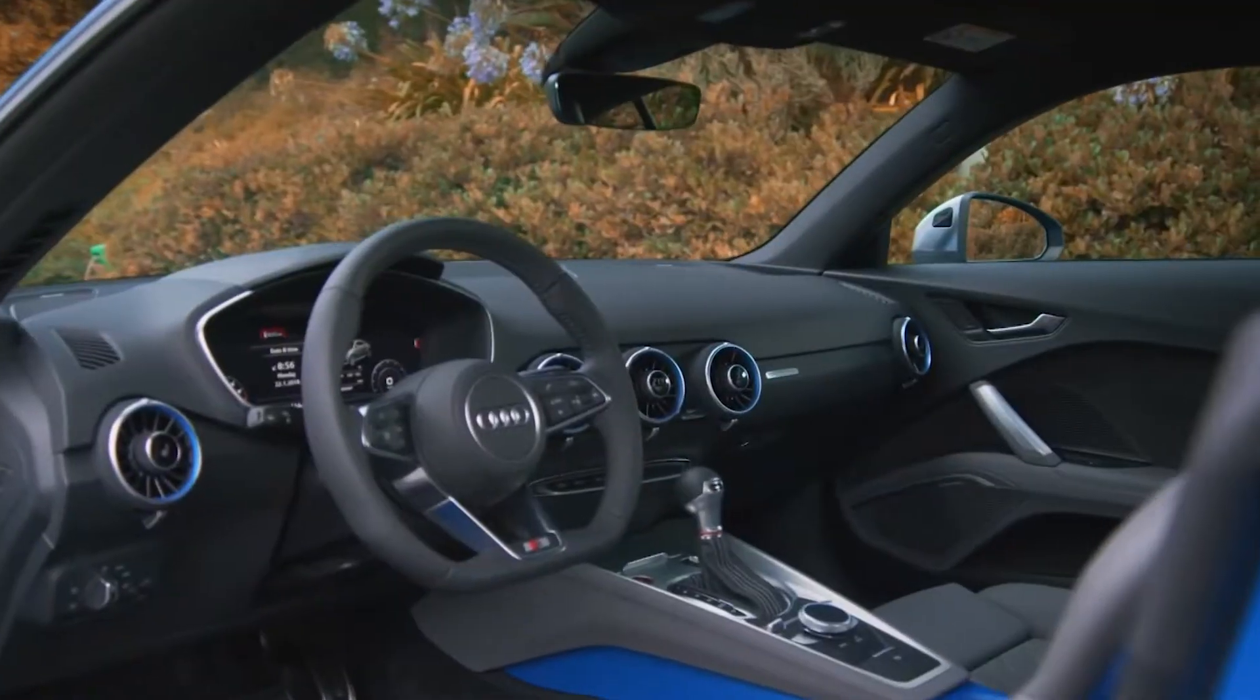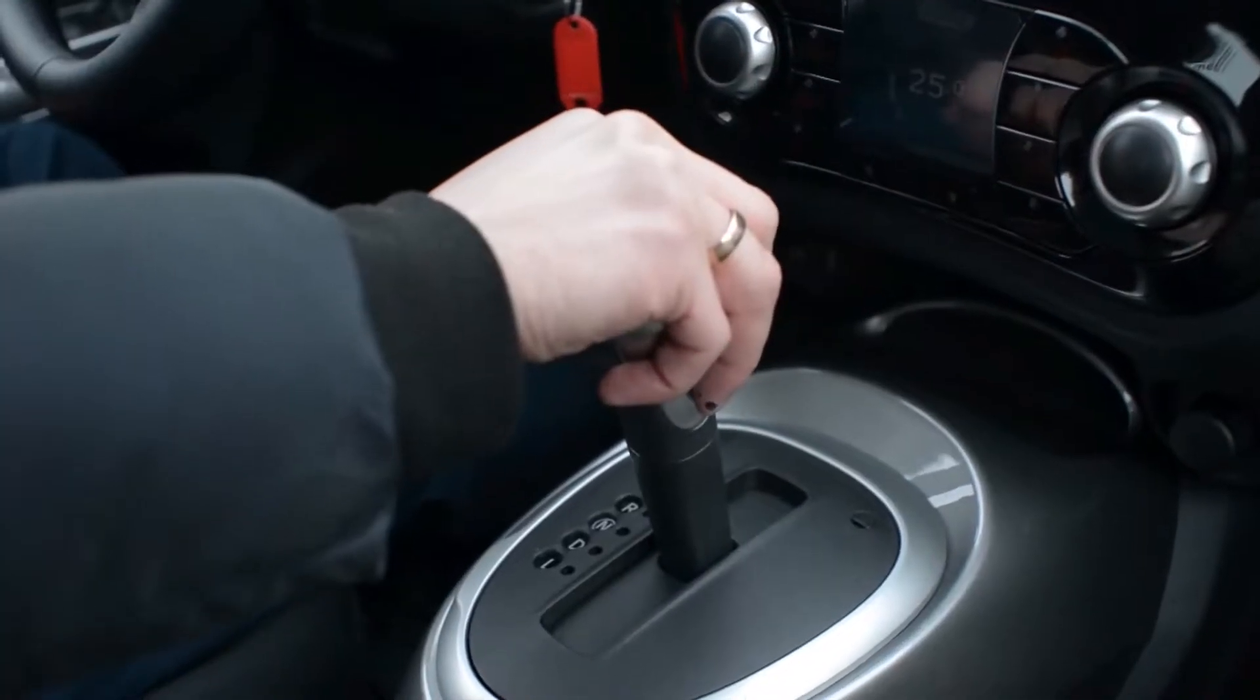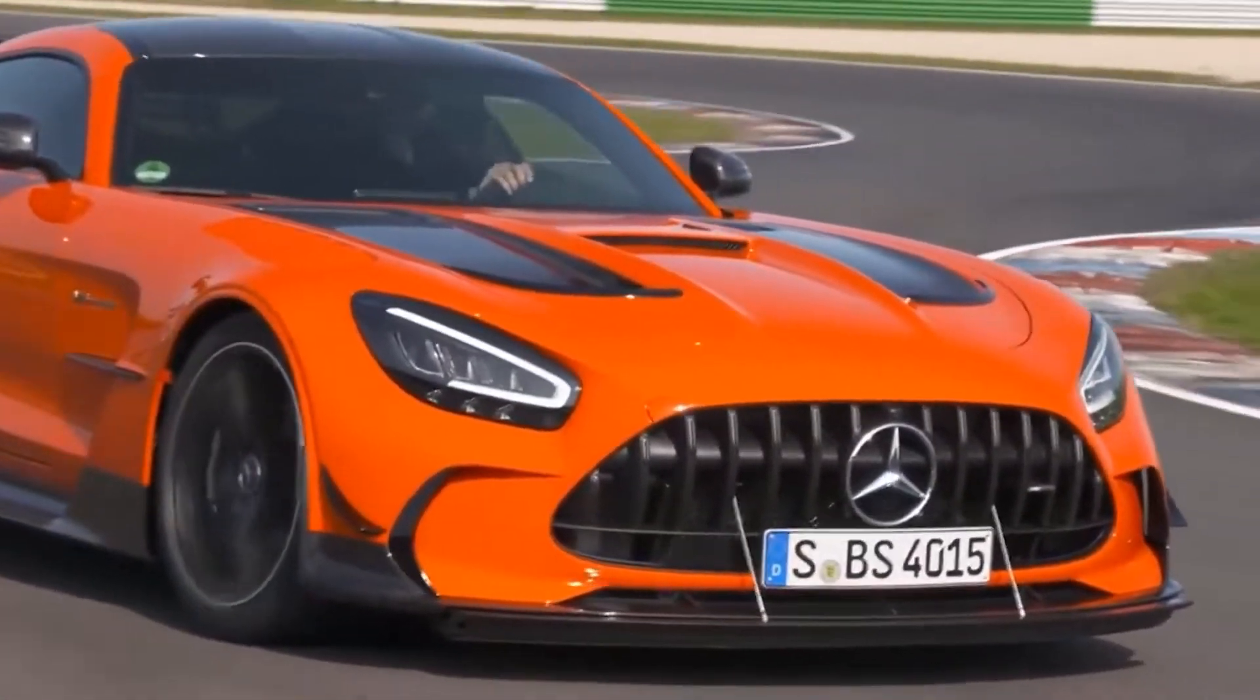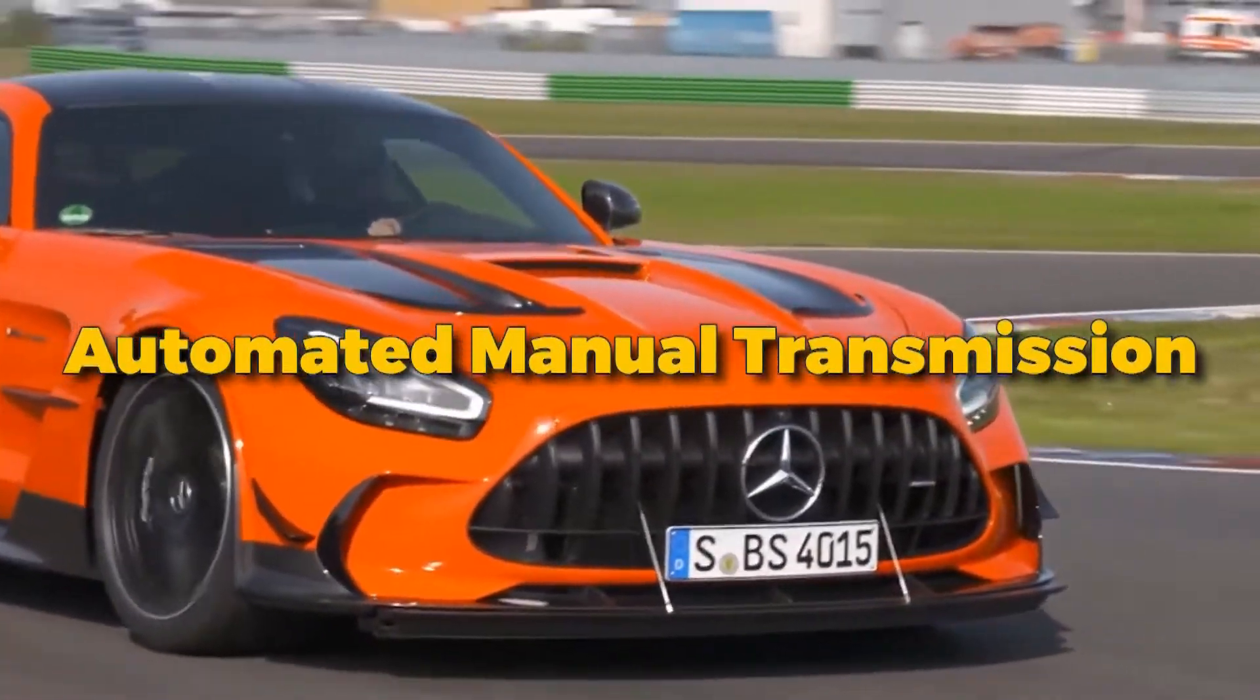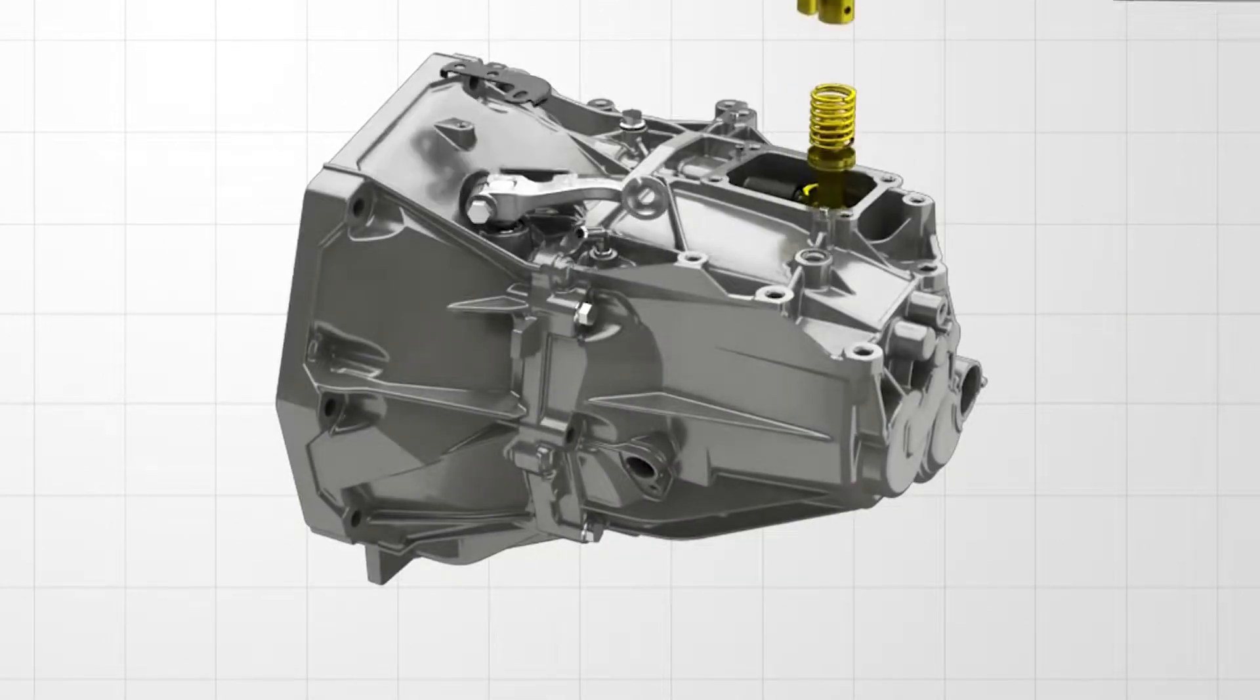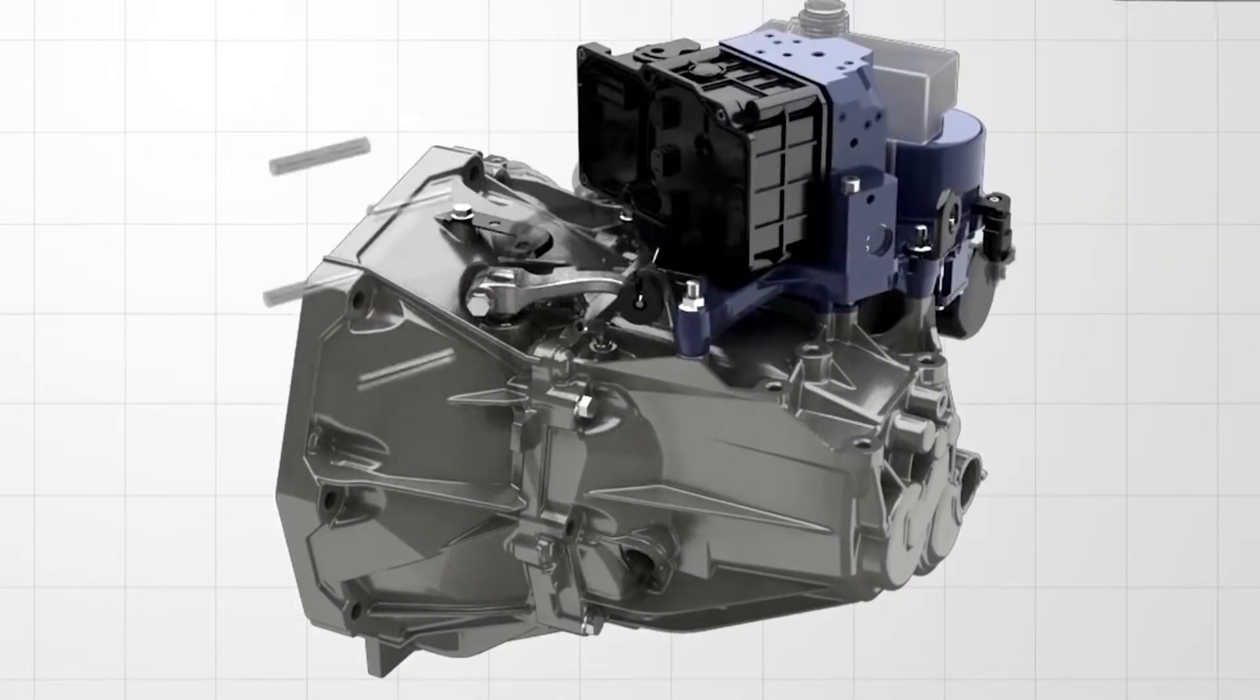Let's start with one of the most common types of automatic transmissions, especially at the lower end of the market, the AMT. The automated manual transmission uses sensors and actuators to perform clutch and gear shifting functions.